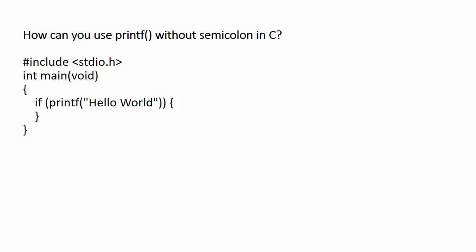For example, we write #include stdio.h which is the header file, then int main which is the main function — the starting point of any C program. After that, we write an if statement and within the parentheses we write printf("Hello World"). This is valid because printf("Hello World") is going to print Hello World on the output screen.